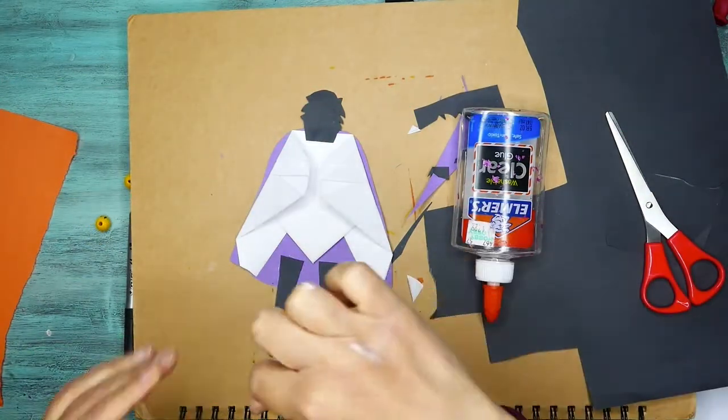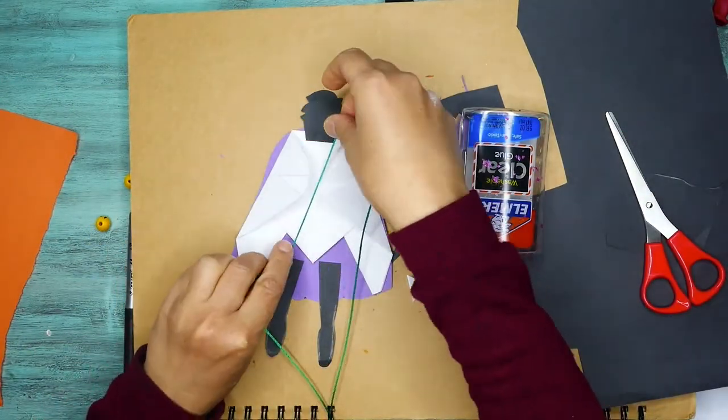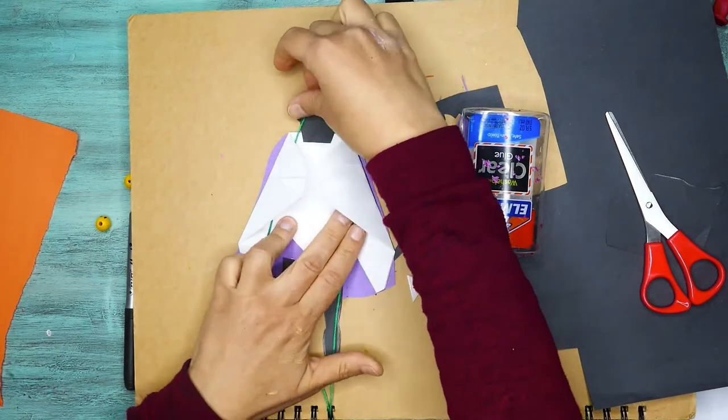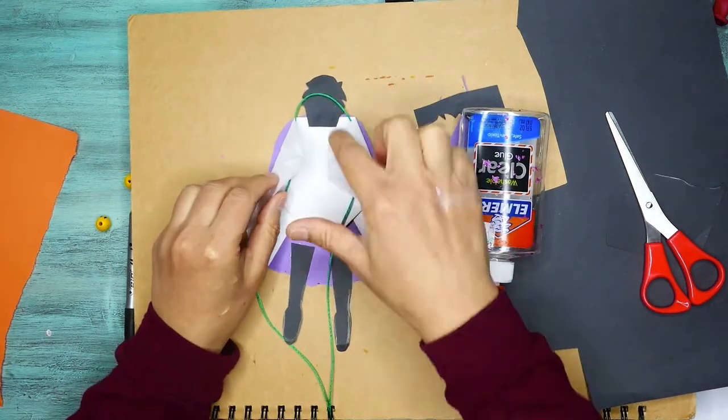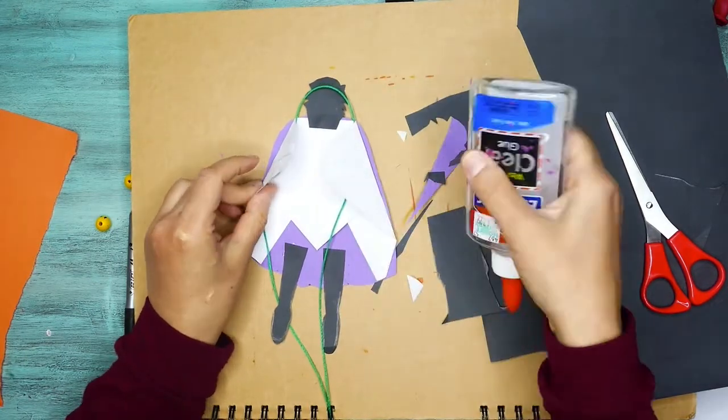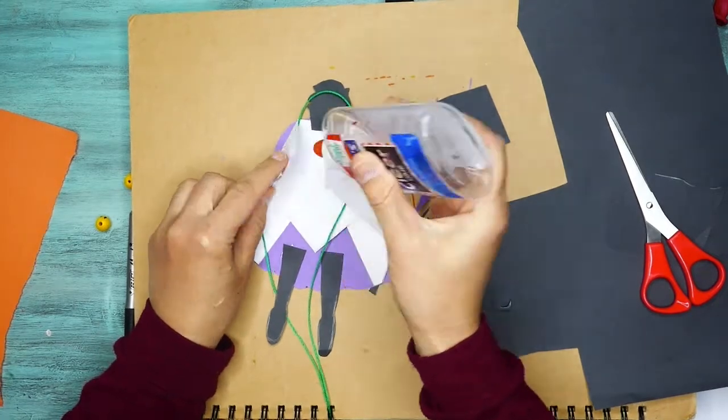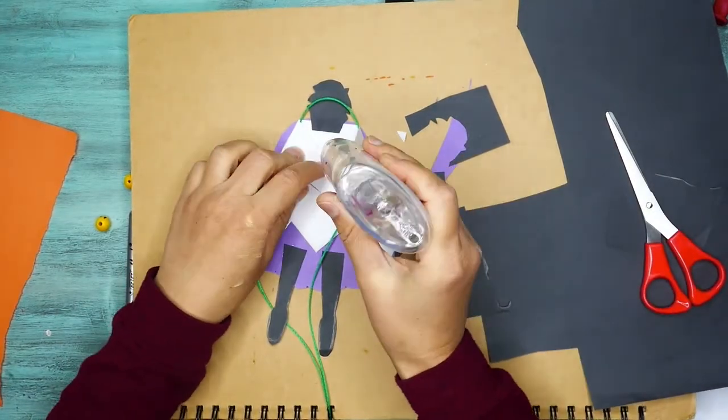I'm just going to put that string in with the loop up the top there. And what I'm going to do is just put a little dot of glue on each side of the string and then just bring those flaps back down.